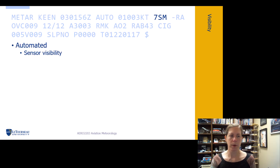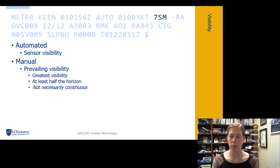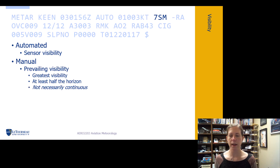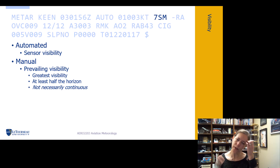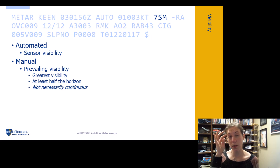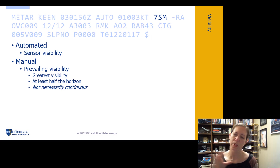The sensor's placement really matters in terms of what it's looking at. For a manual observation, it's going to take prevailing visibility — the greatest visibility across at least half of the horizon, not necessarily continuous. A picture on the next slide gives an overhead view: it's the greatest visibility a person can see of at least half the horizon, not necessarily continuous.